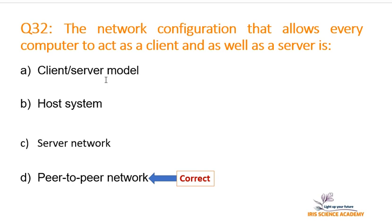Option B is the Host System. The Host System is not actually a network development model, but in it there is a central host device that controls the network and the system. Option C is the Server Network, which is similar to the Client-Server Model in which the server holds overall control of the network and manages all activities and resource management.